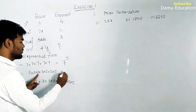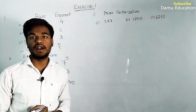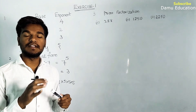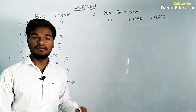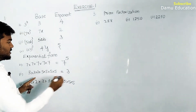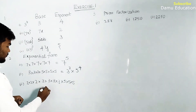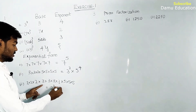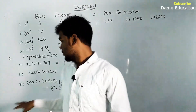For 3 × 3 × 3 × 5 × 5 × 5 × 5: since 3 and 5 are different numbers, we write their exponential forms separately. 3 appears 3 times and 5 appears 4 times, so we write 3³ × 5⁴. For another expression with 2, 3, and 5: 2 appears 3 times, 3 appears 4 times, and 5 appears 3 times, giving 2³ × 3⁴ × 5³.